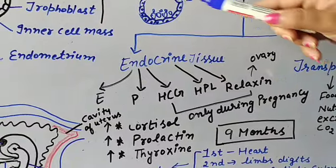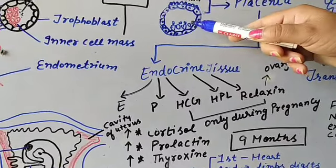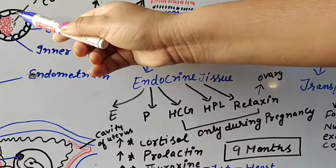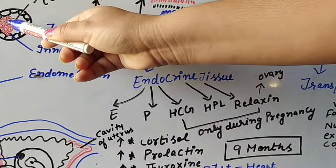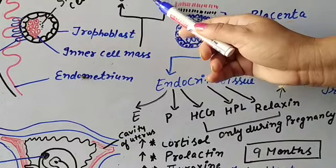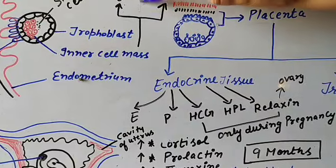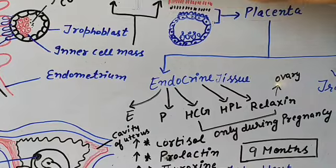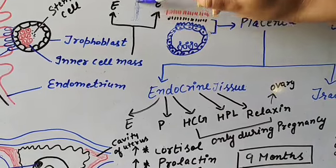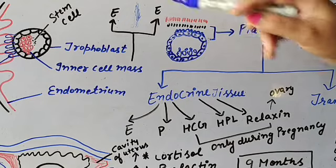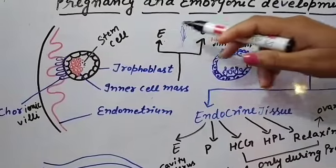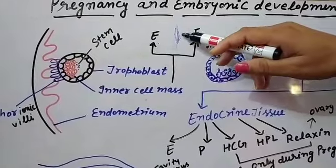The inner cell mass gives rise to the embryo. It gives rise to the ectoderm (the outer layer), endoderm (the inner layer), and the mesoderm layer in between. These three different layers — ectoderm, endoderm, and mesoderm — form the different organs in the developing embryo.